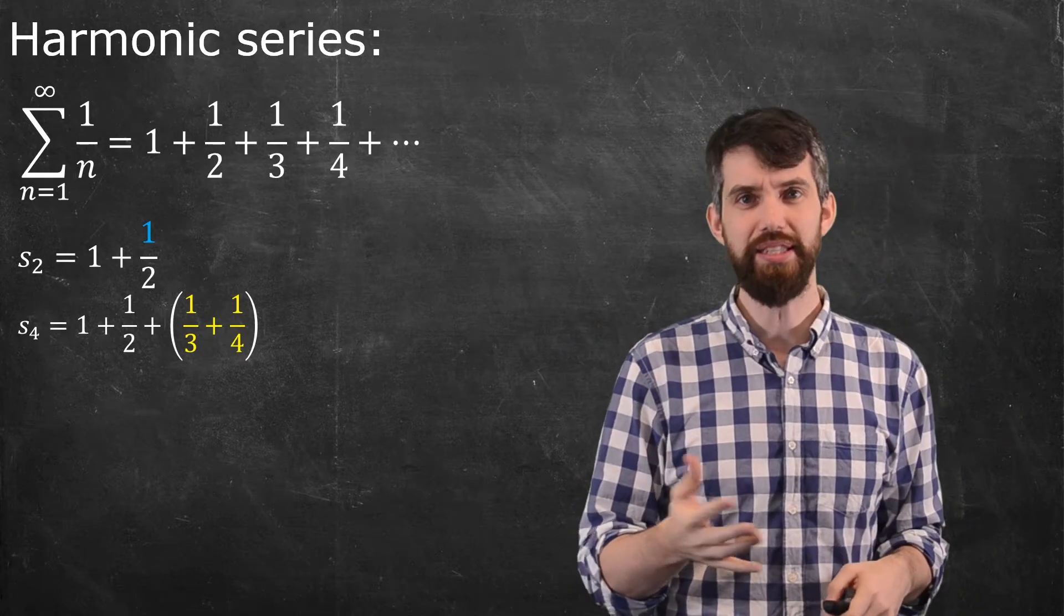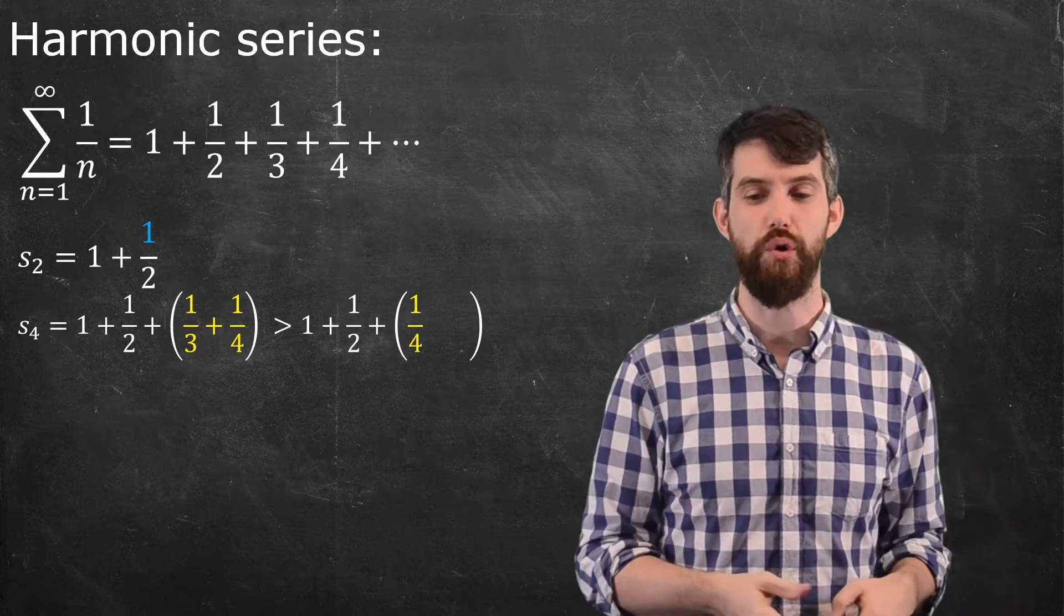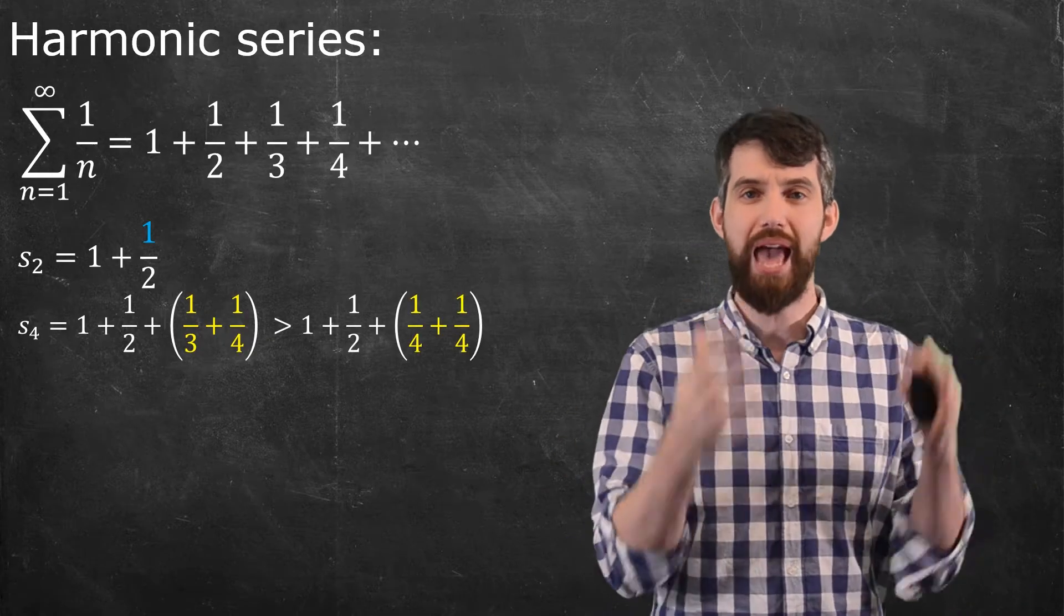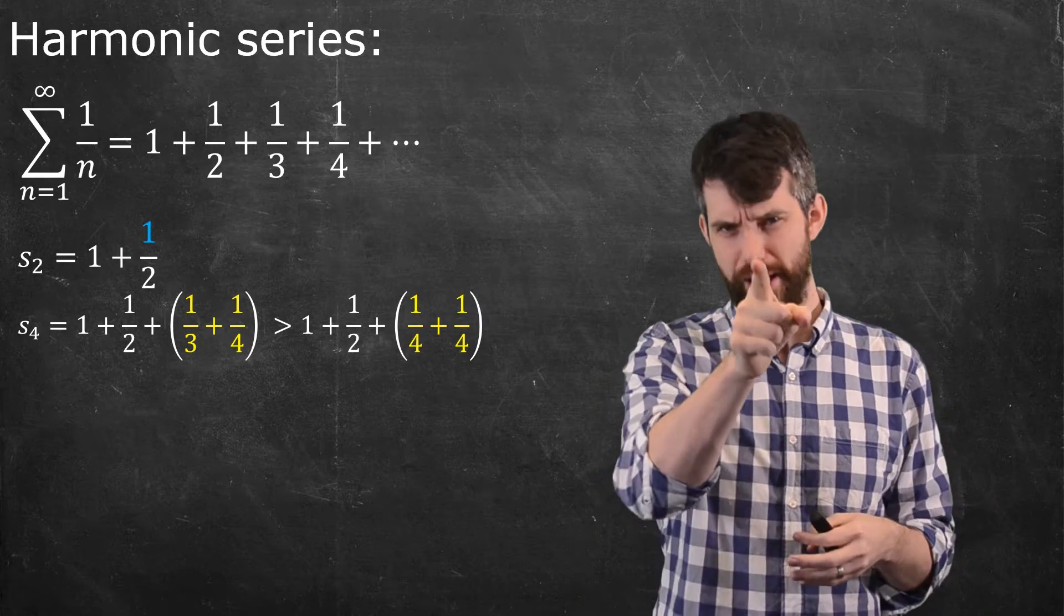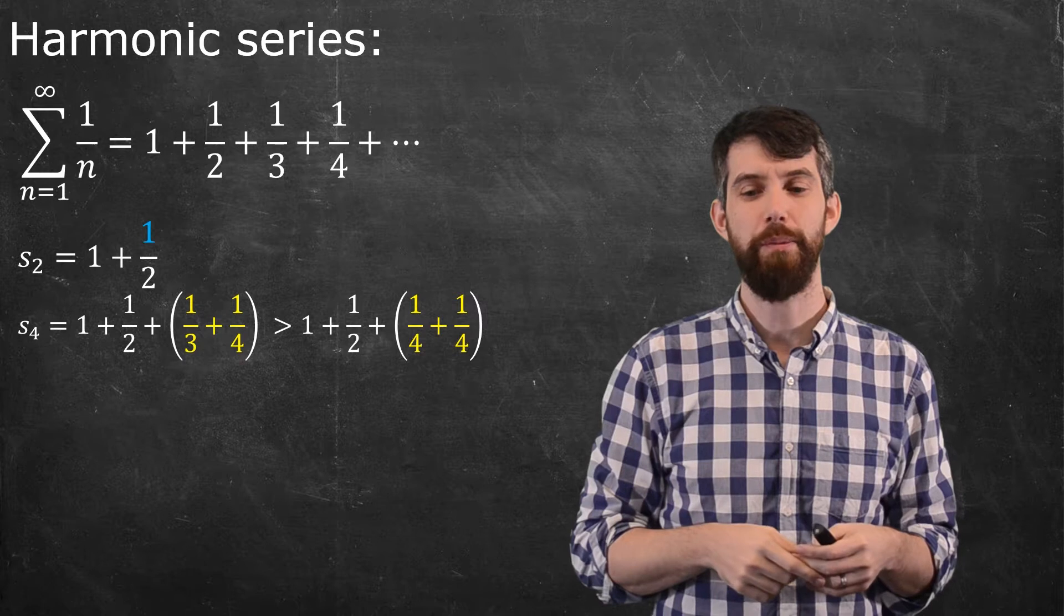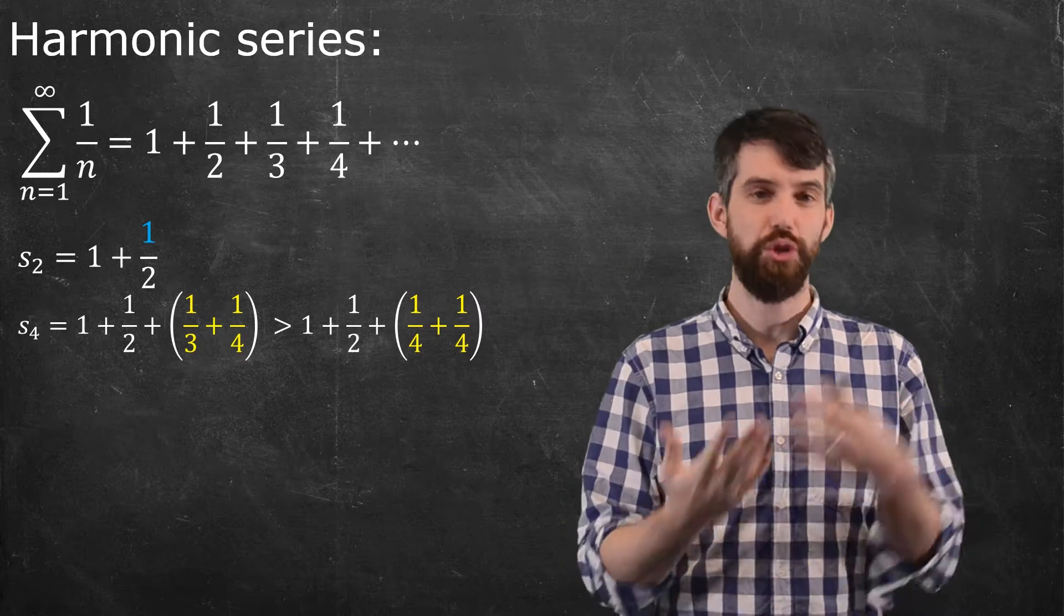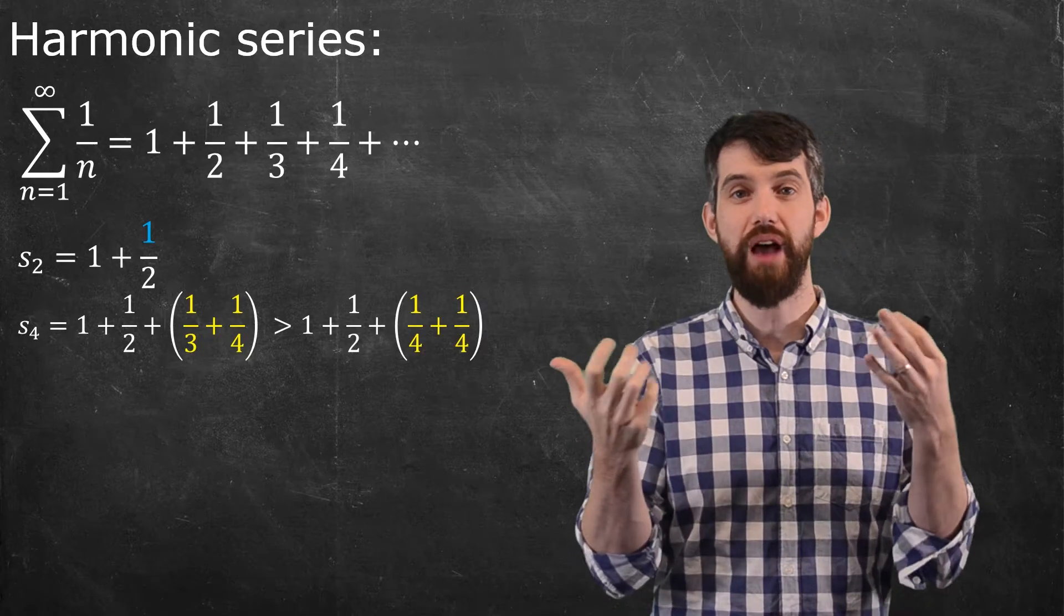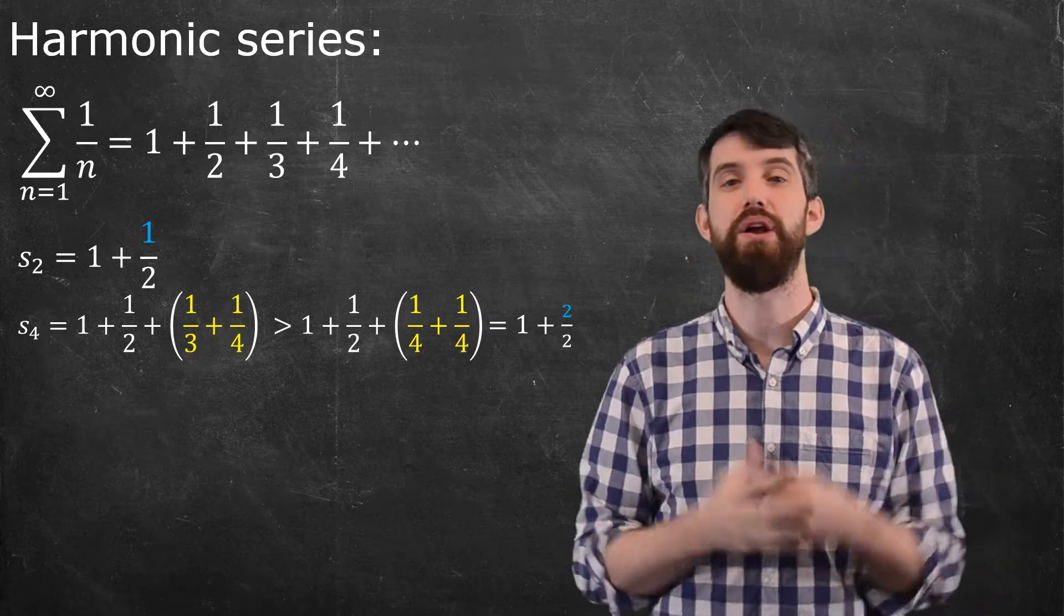Whatever this is, this is going to be bigger than if I replace the one-third with just another one-quarter. It's bigger than 1 plus a half plus a quarter plus a quarter. I'm doing this little inequality here. Well, if this is the case, a quarter and a quarter is a half. So I have 1 plus 1 half and then another half. That is to say, I have 1 plus 2 halves. So it's certainly bigger than that.